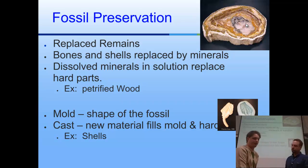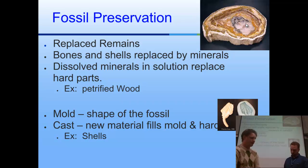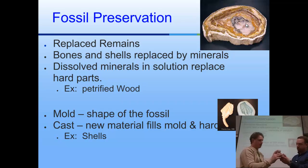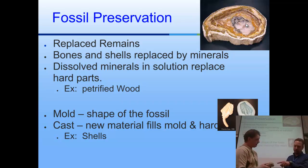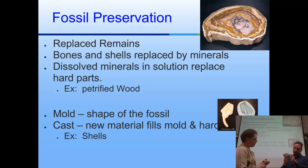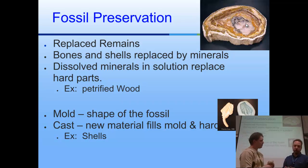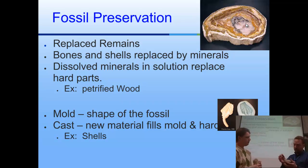So fossil preservation — the replacement of the remains — is probably more commonly what people think about when they think about fossils. So bones and shells like the one here — looks kind of like a hip bone, like a ball and socket. That's heavy. The calcium of the bones is now actually rock. This one was found on a friend's property outside of Dallas, way far away from the ocean, but that's the fossil of an organism that lived there. So you can have bones or shells replaced by harder material.